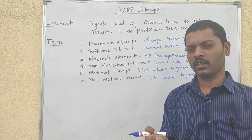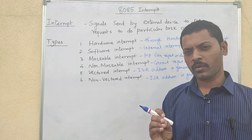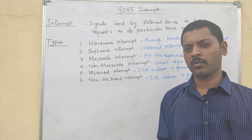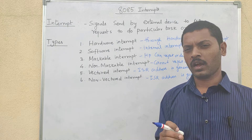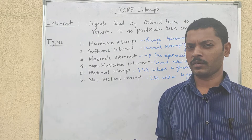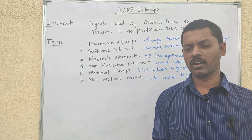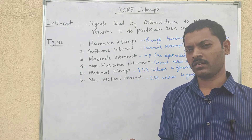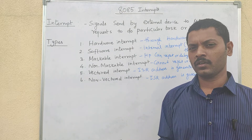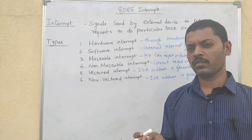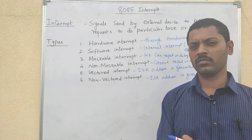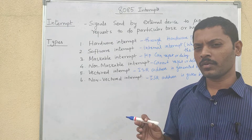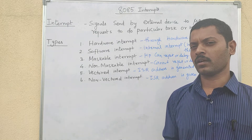If the microprocessor can reject or delay the interrupt, that is the maskable interrupt. For vector interrupts, the ISR address is generated by the microprocessor itself — the corresponding device provides the ISR address. That is the vector interrupt. The 8085 uses vector interrupts.